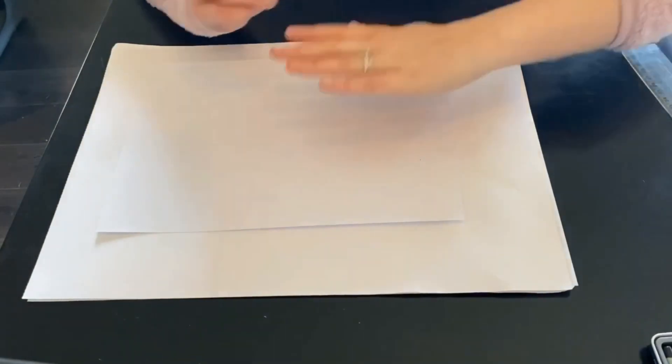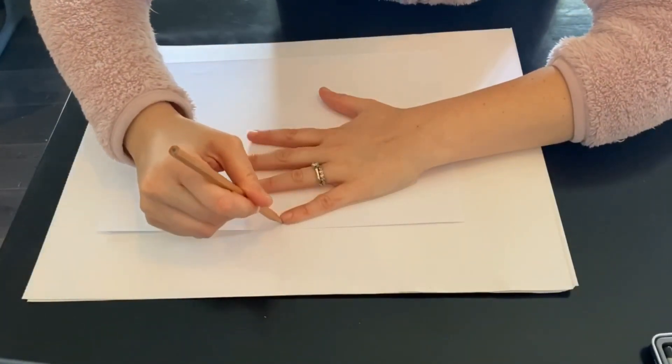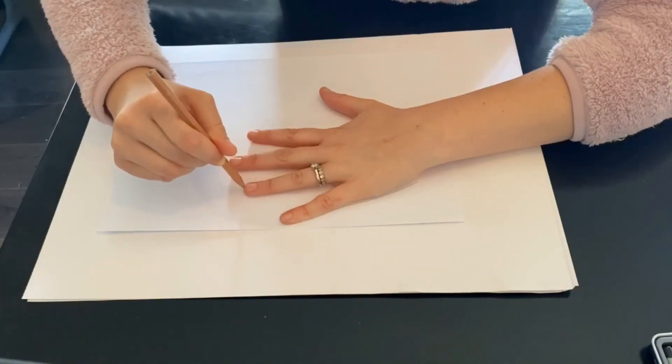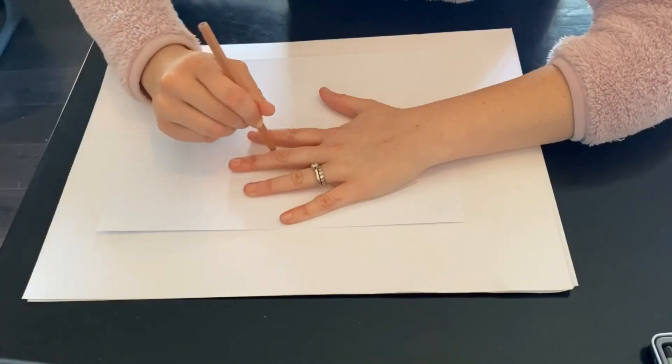The first thing we're going to do is trace one of our hands horizontally, which is sideways. Hold your pencil nice and tight and keep it upright, nice and tall, rather than on an angle sideways, or else your fingers will be a little bit too skinny.